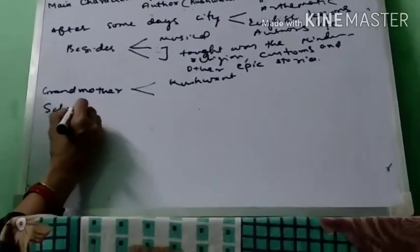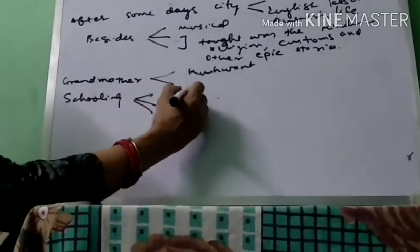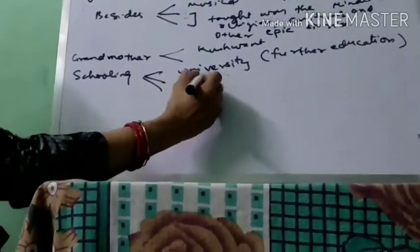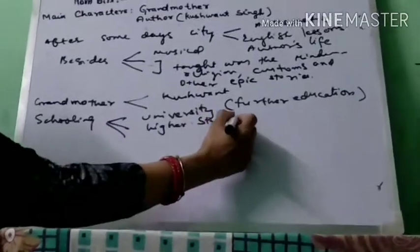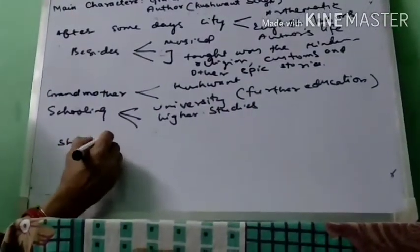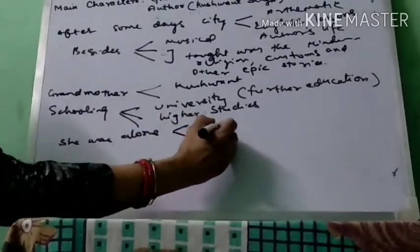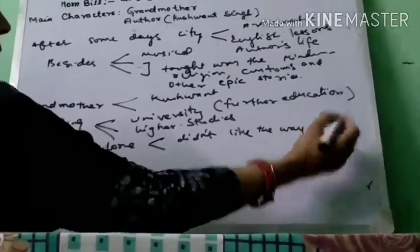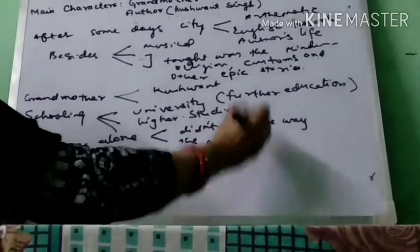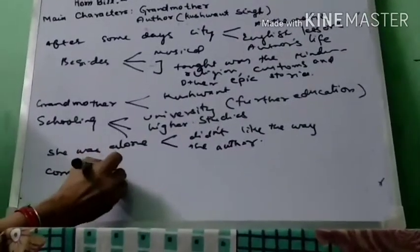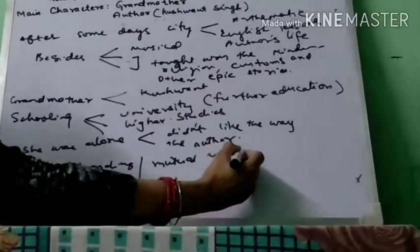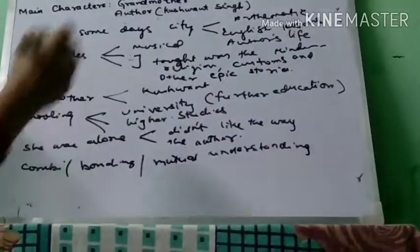After some days, when the schooling of Kushwant Singh was over, he had to go to the university for his further higher studies. The grandmother did not like the way the author was being taught. Slowly, the bonding and mutual understanding between them were totally disturbed, because the author was busy with his studies and the grandmother was busy with her deeds, rosary and prayers.